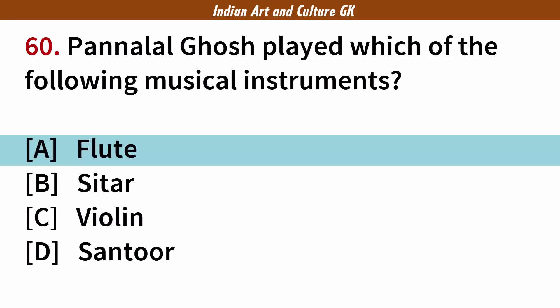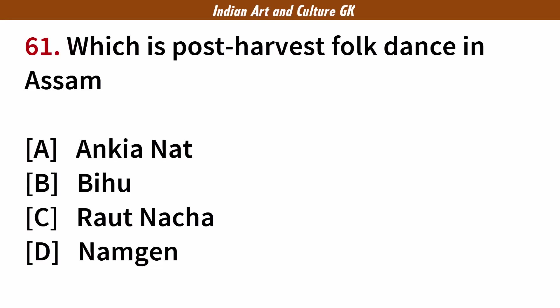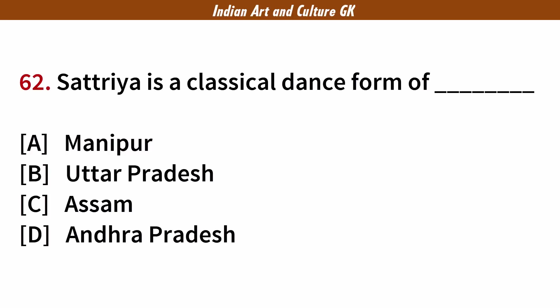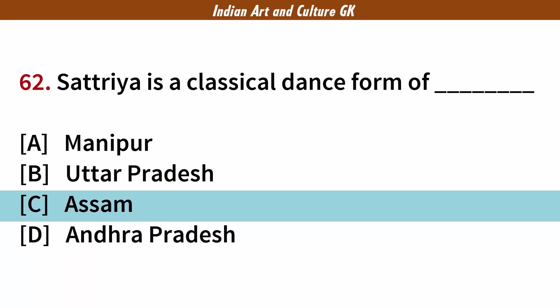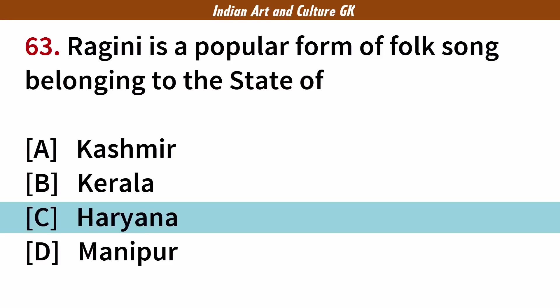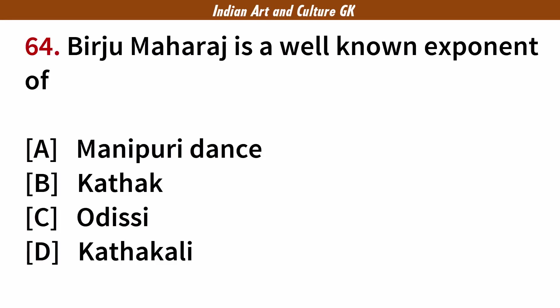Which is a post-harvest folk dance in Assam? Answer: B. Bihu. Satriya is a classical dance from? Answer: C. Assam. Ragini is a popular form of folk song belonging to the state of? Answer: C. Haryana. Birju Maharaj is a well-known exponent of? Answer: B. Kathak.